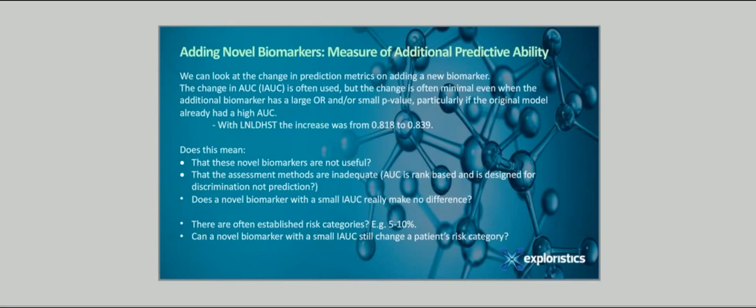An obvious approach is to look at the change in our prediction metrics on adding a new biomarker. The change in AUC, or IAUC, is often used, together with its p-value. But the change is often minimal, even when the additional biomarker has a large odds ratio and or a small p-value, particularly if the original model already had a high AUC. For example, with lactate dehydrogenase, the increase in AUC was from 0.818 to 0.839, and this seems a small increase. So, does the lower IAUC mean that these novel biomarkers are not useful? Well, does it mean the assessment methods are inadequate? AUC, for example, is rank-based and is more important for discrimination, not prediction or prognosis. Does a normal biomarker with a small IAUC really make no difference?